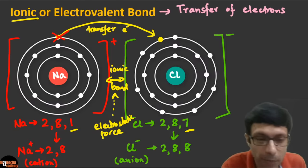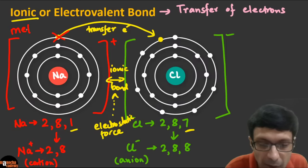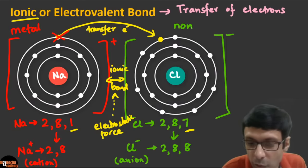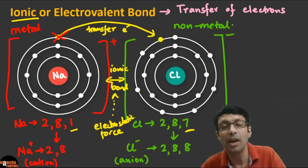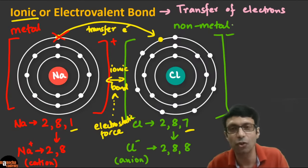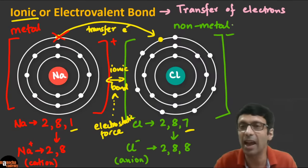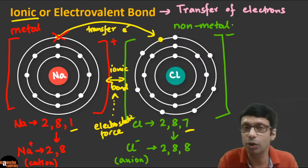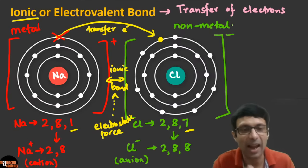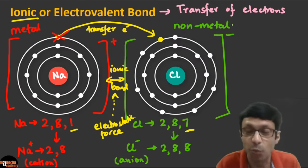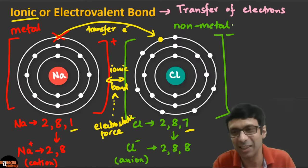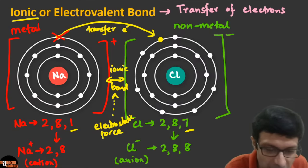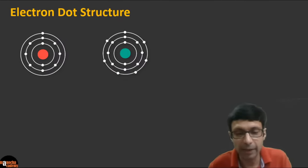Ionic or electrovalent bonds are formed between a metal and a non-metal. Metals have one, two, or three electrons in the outermost shell and tend to lose electrons. Non-metals have four, five, six, or seven electrons and tend to gain electrons. That is why ionic bonds are formed between metals and non-metals — one has the tendency to lose an electron and the other has the tendency to gain.